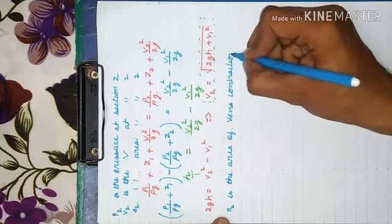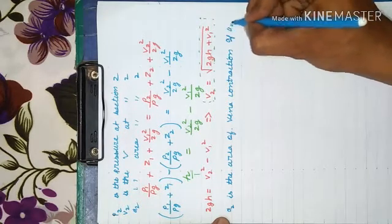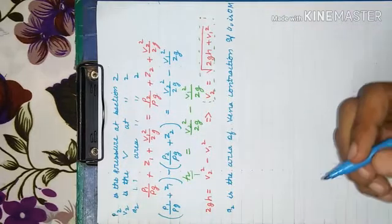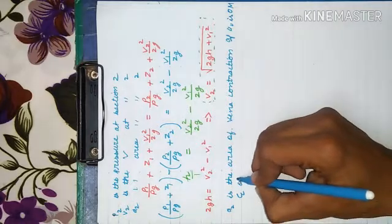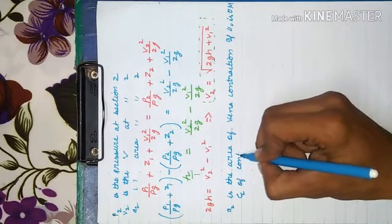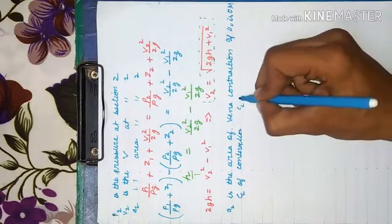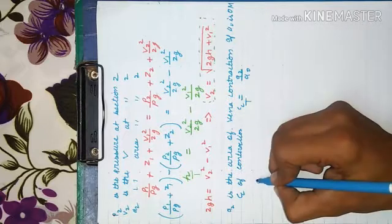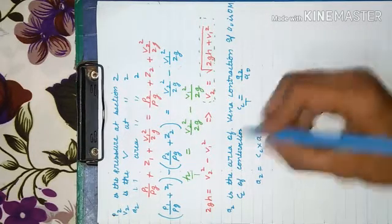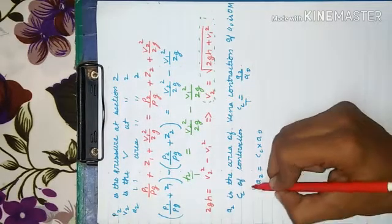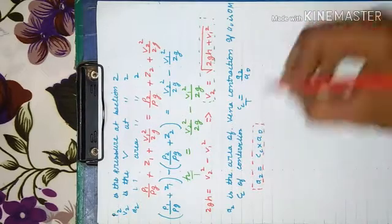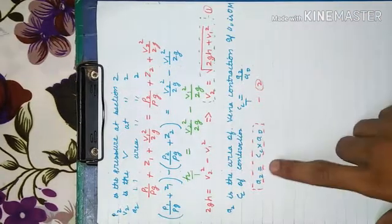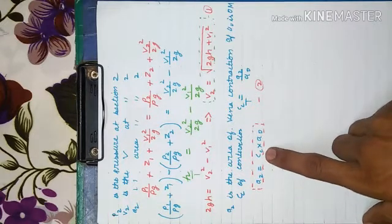A2 is the area of vena contracta and A0 is the area of the orifice plate. The coefficient of contraction Cc is defined as A2 upon A0. By cross multiplication, A2 = Cc × A0. This is our equation number 1 and equation number 2.